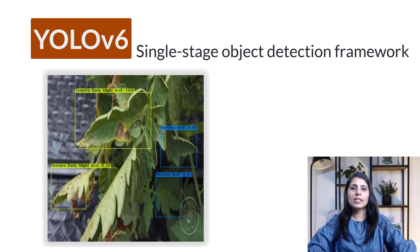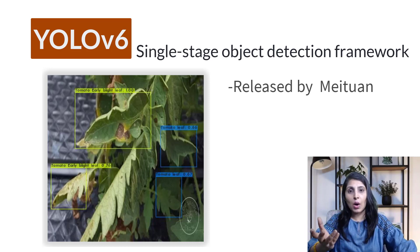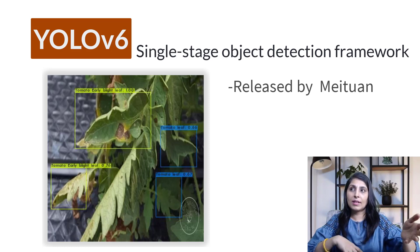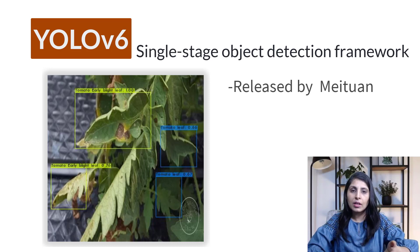Hello everyone, this is Arohi and welcome to my channel. In this video I'll show you the practical implementation of YOLOv6, which was released one week back by the research group at Meituan. YOLOv6 is a single-stage object detection algorithm, meaning it directly predicts object bounding boxes for an image in one stage. This makes it much faster and more suitable for mobile devices. One thing to note is that YOLOv6 is not part of the official YOLO series, but the results are quite good.